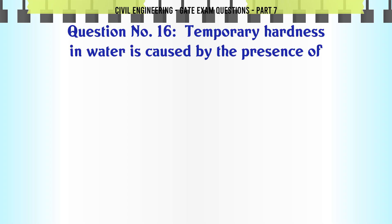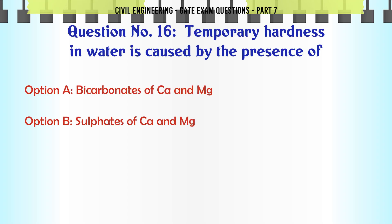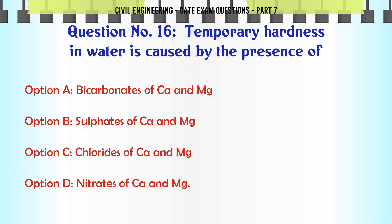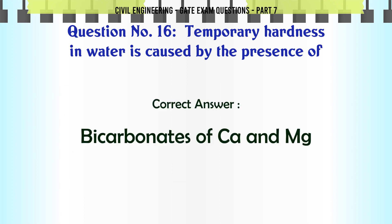Temporary hardness in water is caused by the presence of: A) bicarbonates of Ca and Mg, B) sulfates of Ca and Mg, C) chlorides of Ca and Mg, D) nitrates of Ca and Mg. The correct answer is: bicarbonates of Ca and Mg.